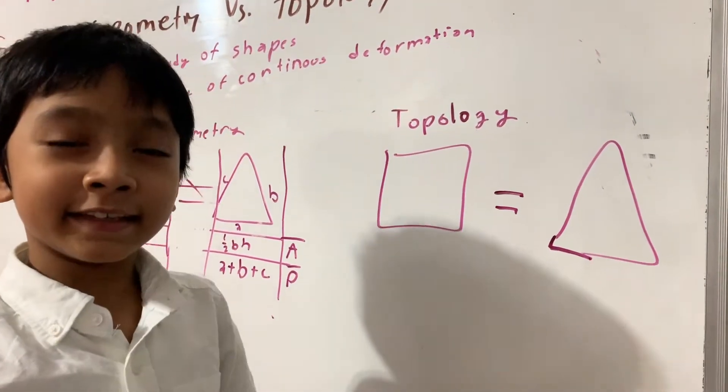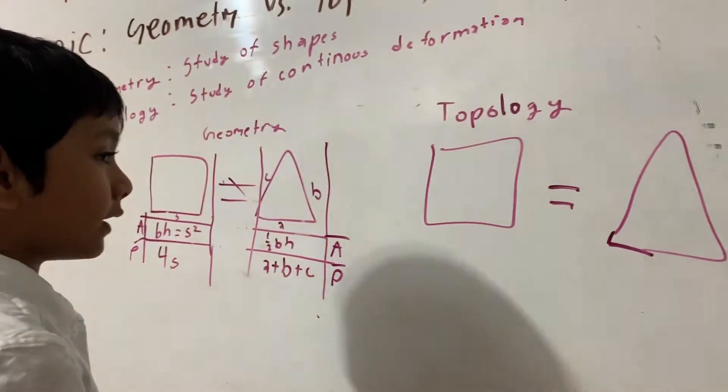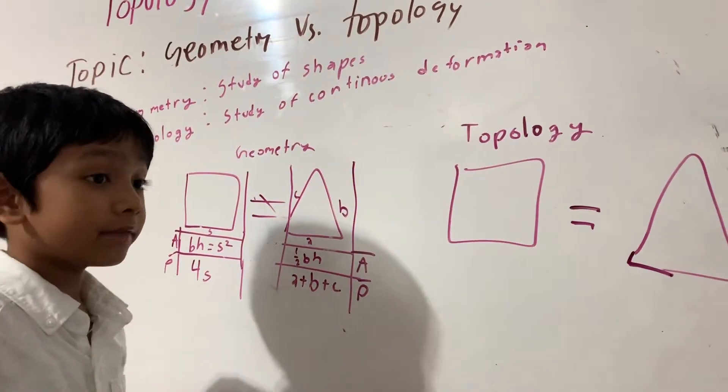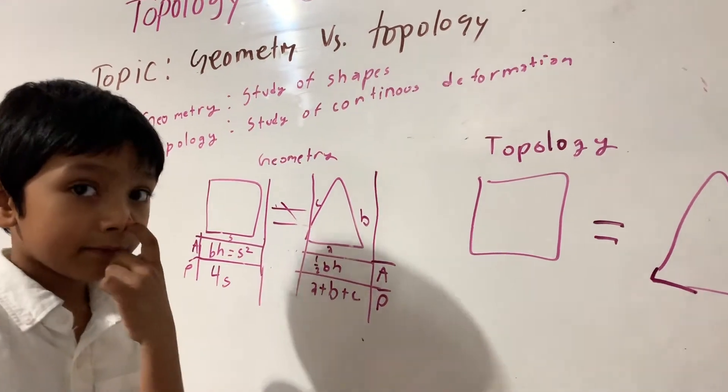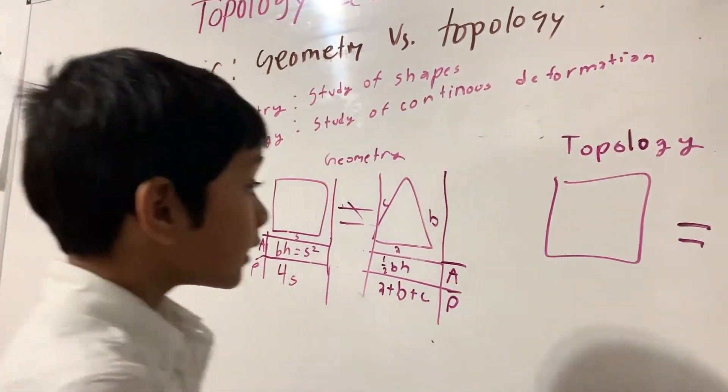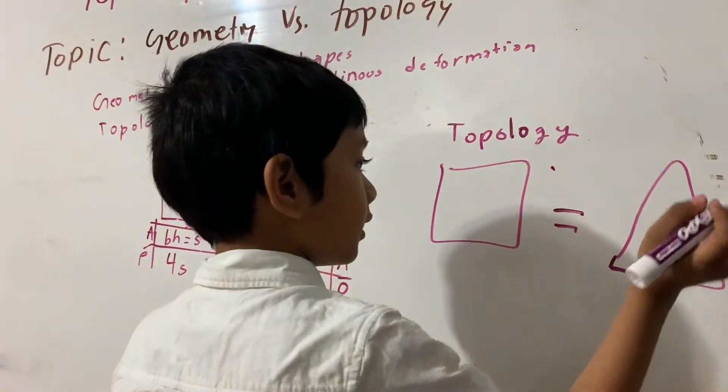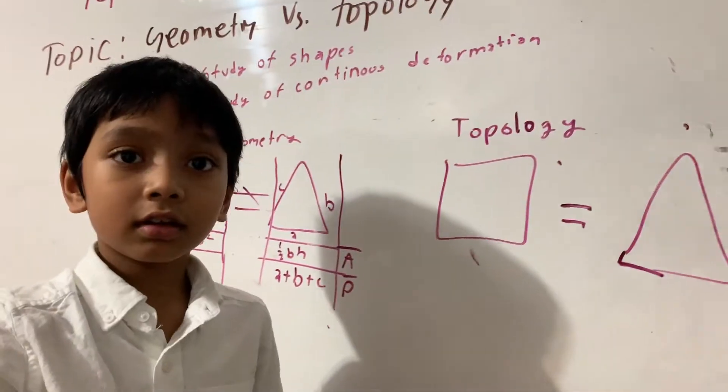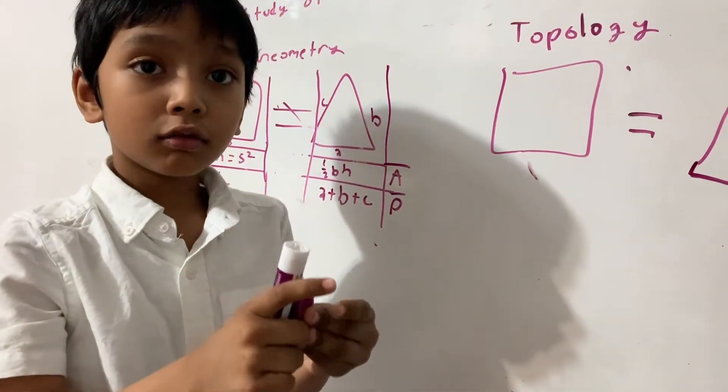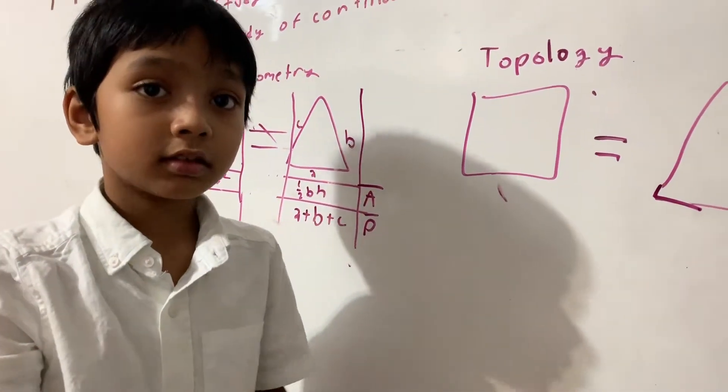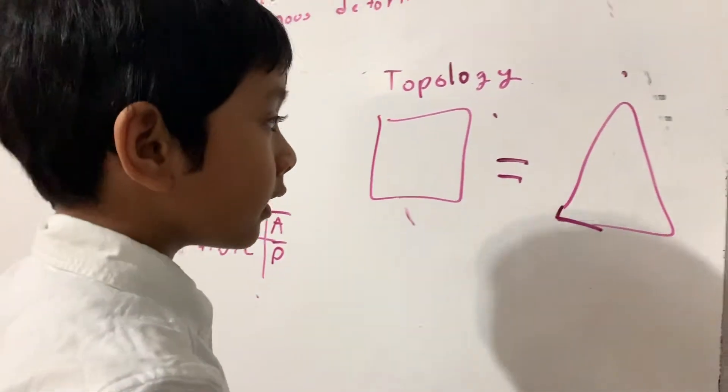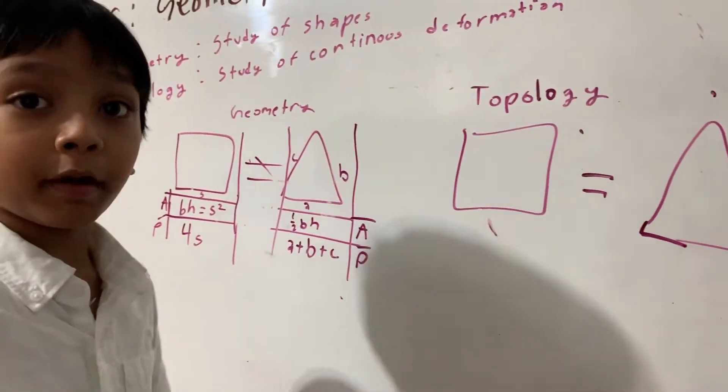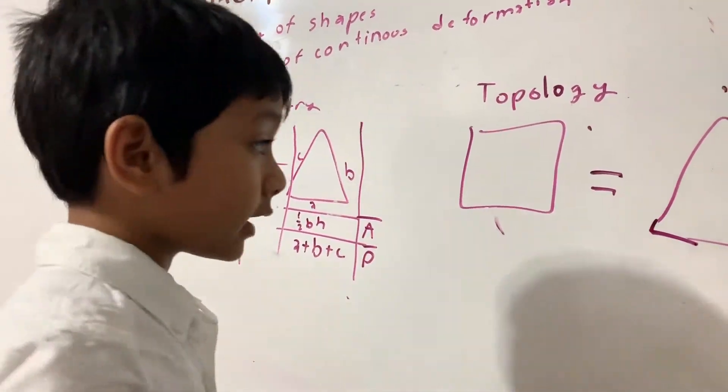First, let's note that we can make a square into a triangle from continuous deformation. It is not gluing or tearing it. You can deform it without gluing or tearing it apart.